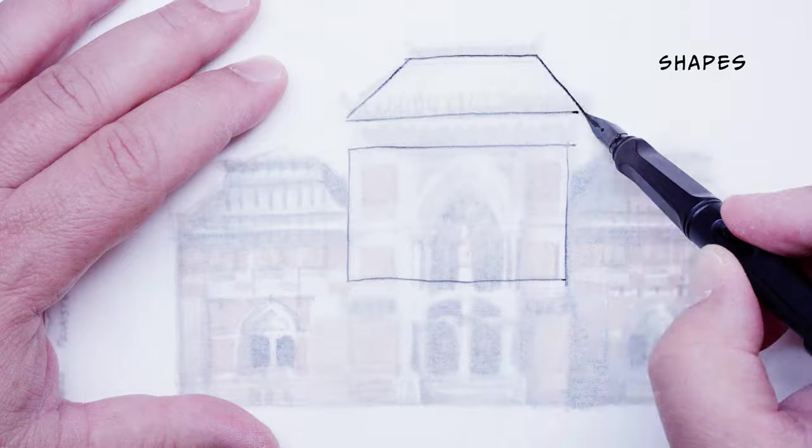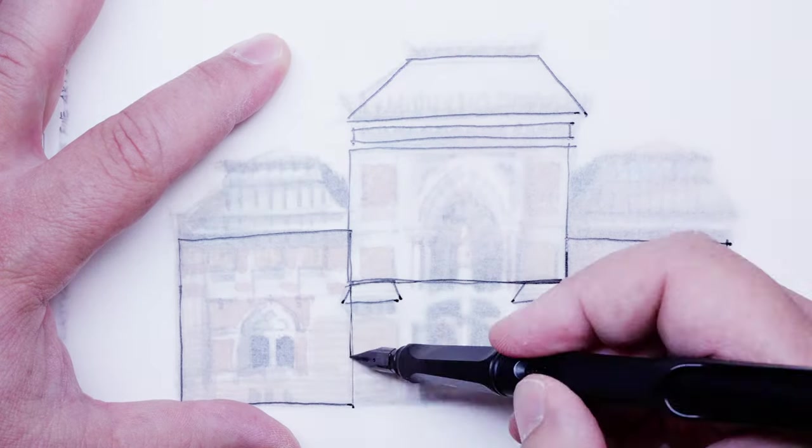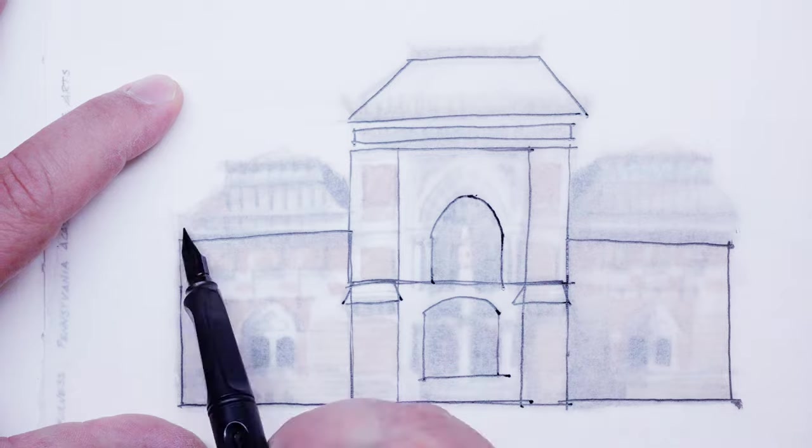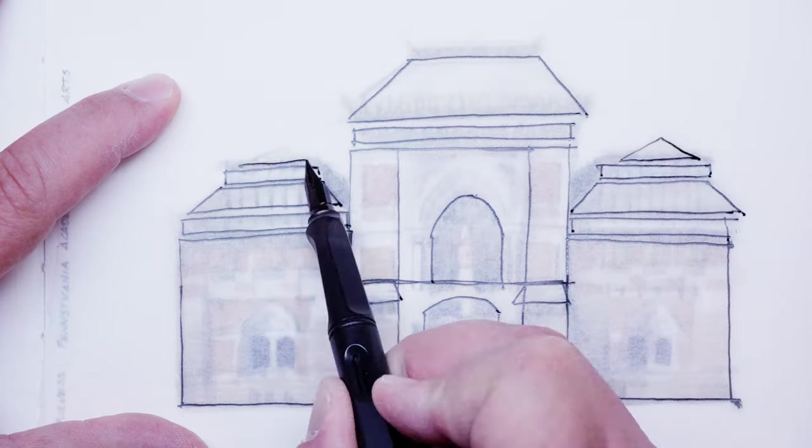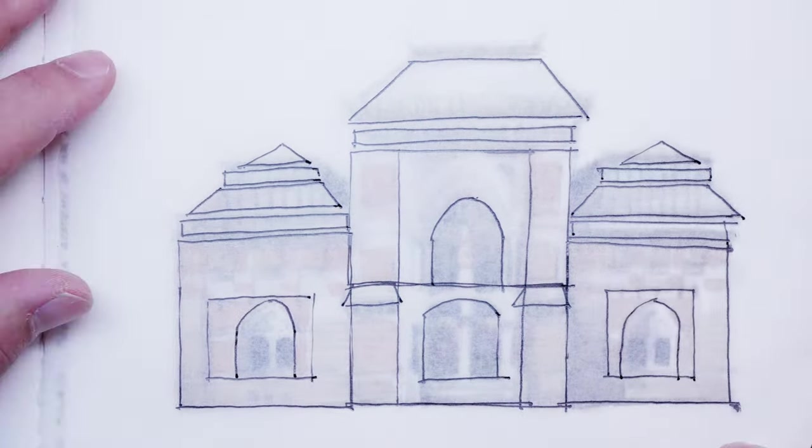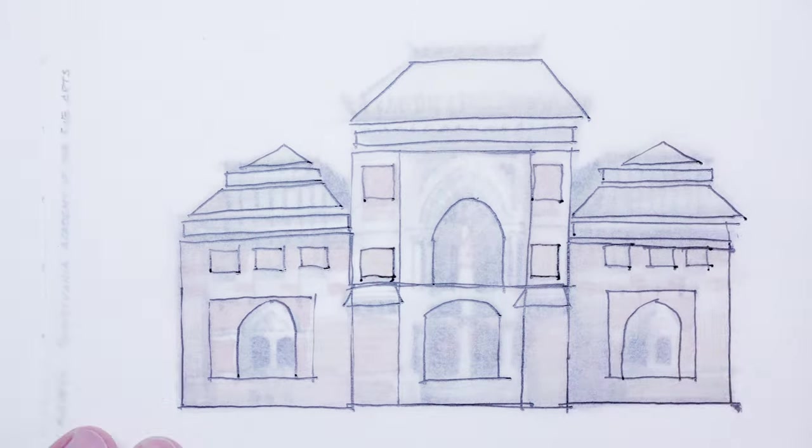Shapes. A shape is the plane of a surface, figure, or object. Shapes can be representational of what the eye sees or abstract geometries like circles, squares, and triangles.